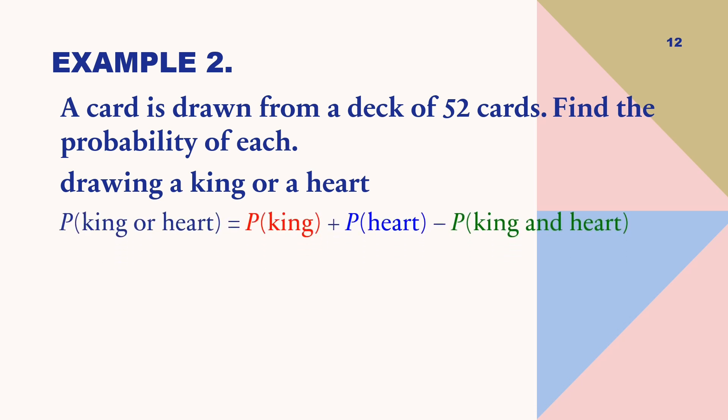So, the working equations we have, finding the probability of king or heart is equal to the probability of event A, which is probability of getting king, plus the probability of event B, which is getting heart, minus the probability of their intersection, which is king and heart. So, the probability of king is equal to four over 52, plus the probability of heart, which is one-fourth, minus the probability of king and heart, which is one over 52. So, simplifying the equations, the answer is four over 13.